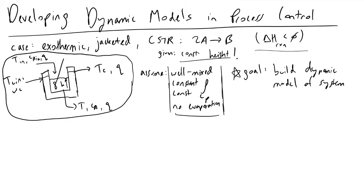We also have a coolant jacket with Tcn going in and Tc leaving, as well as a mass flow rate of our coolant denoted Wc. The height of our CSTR is assumed to be constant during this process. We will be making a well-mixed assumption, a constant density assumption, a constant heat capacity assumption meaning Cp is not a function of temperature, and we'll also assume there's no evaporation occurring, because if there's evaporation the height will change and the math gets a lot more complicated.